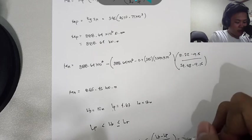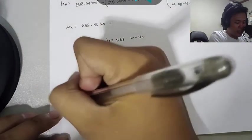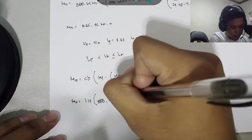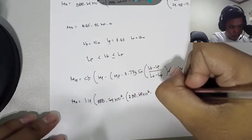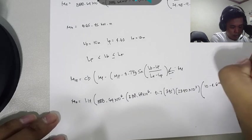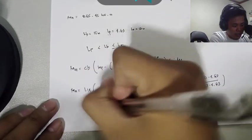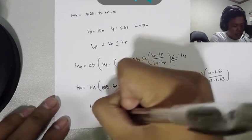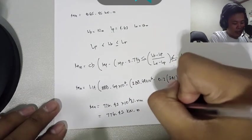By direct substitution, we get a value of MN of 776.42 × 10⁶ Newton per millimeter or 776.42 kilonewton-meter. If we notice, it's smaller than MP, so okay. We'll use this value of 776.42.